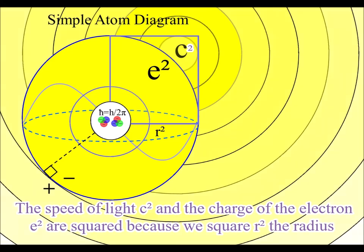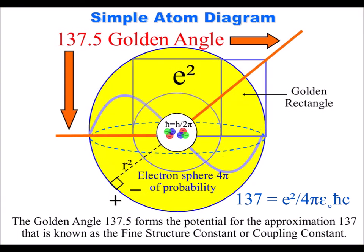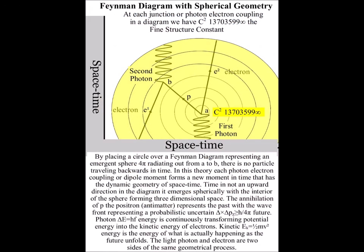We have a continuous process of energy exchange forming the golden rectangle and golden angle relative to the charge of the electron squared and the surface of the sphere. The golden angle forms the potential for the fine structure constant or coupling constant in the form of the mathematical approximation 137.